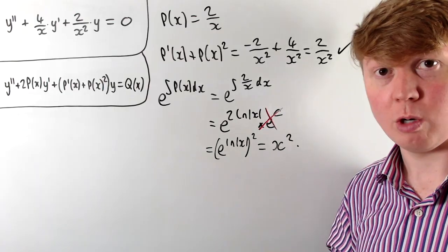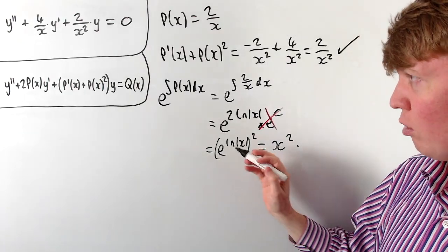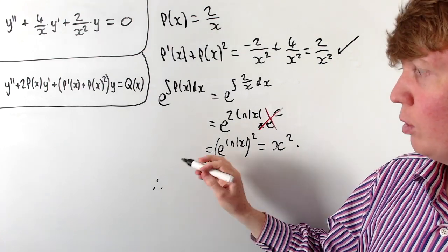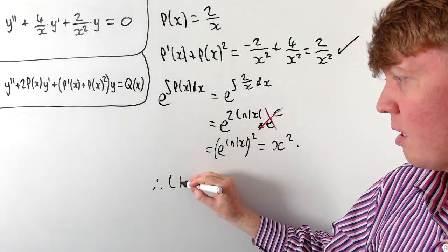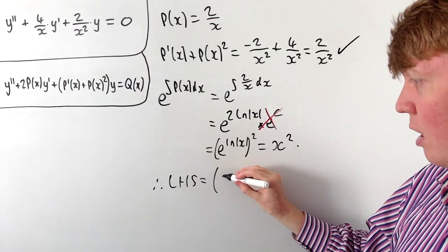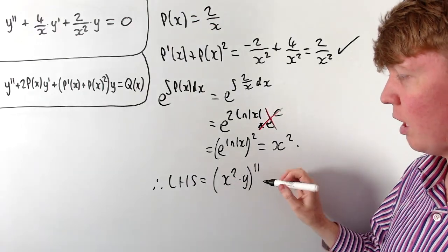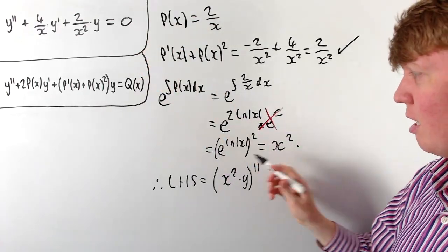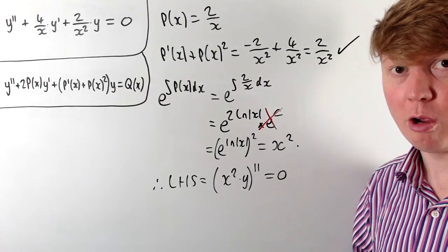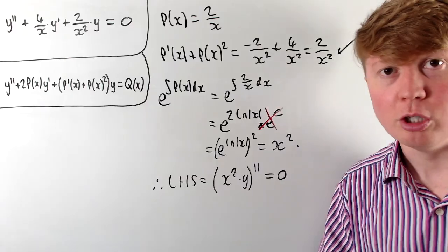This explains why we knew we could multiply by x squared at the start. Our integrating factor is x squared, so multiplying the left-hand side gives the second derivative of x squared times y, a nice product, and the right-hand side is just zero. We can then solve the differential equation exactly as before.